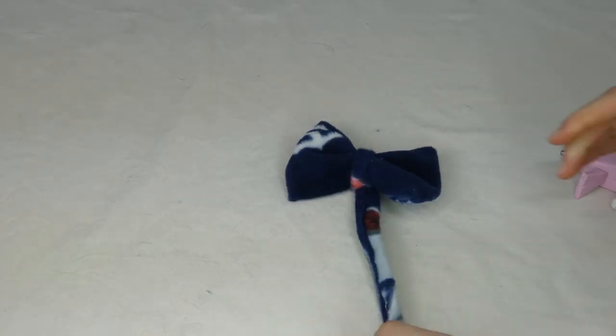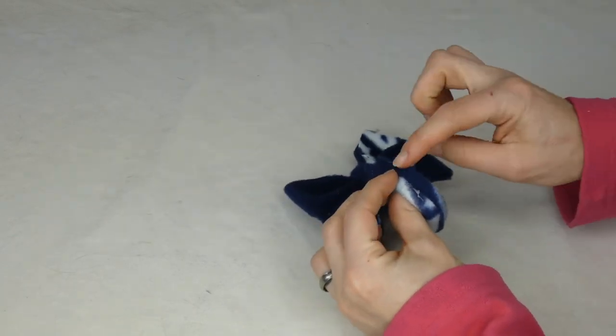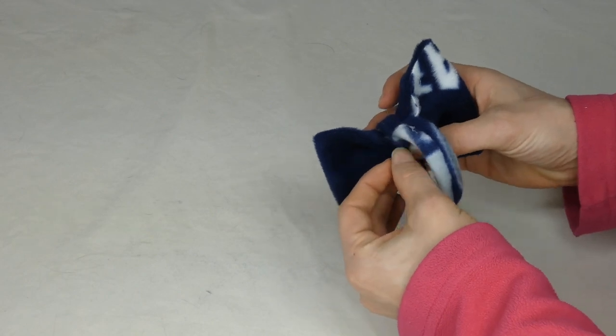And what you're going to want to do now is just stick some Velcro on the back side here and some Velcro on this end here. And then you'll be able to Velcro it right around your pet's collar.